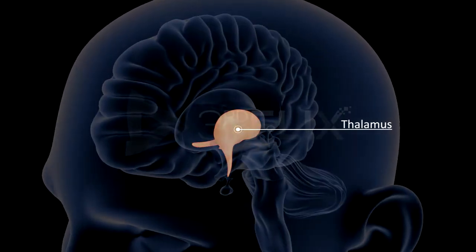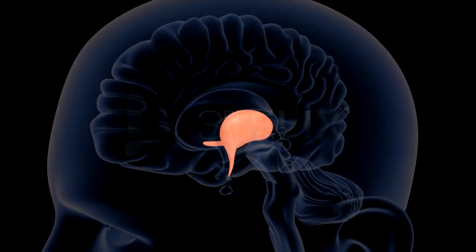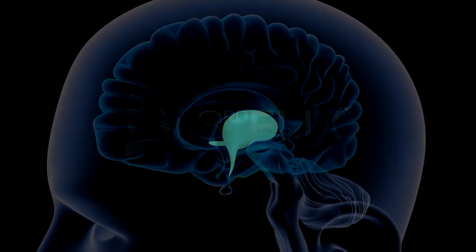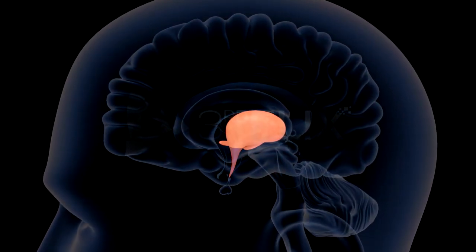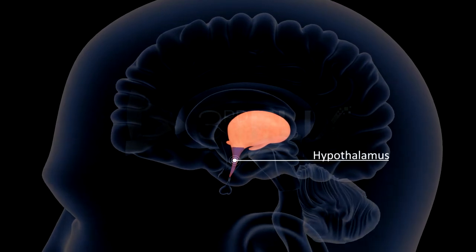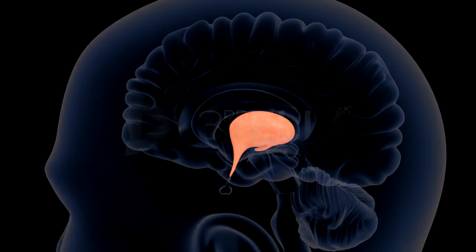The thalamus is the major coordinating center for sensory and motor signaling. The cerebrum wraps around the thalamus. The floor of the diencephalon is referred to as the hypothalamus. It lies at the base of the thalamus.